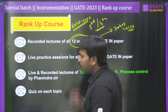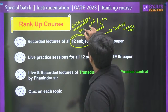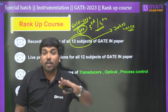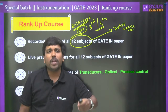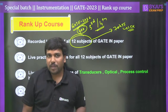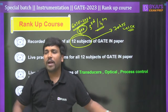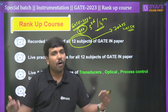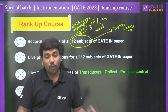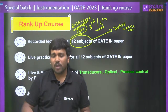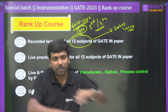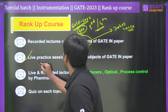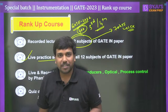If you got a rank of around 400 or 500 AIR in instrumentation and you want a better rank, you need to prepare one or two extra subjects. In 2022 you might have missed a few subjects due to lack of time or resources. Now with recorded lectures available, you can exclusively focus on those subjects, complete them fast, and then go for practice sessions to do more and more practice.